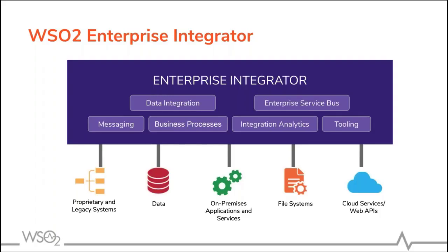Previously, the WSO2 integration platform consisted of a set of individual servers which fulfill different needs in enterprise integration: ESB as the central service bus which handles integration, and a data services server for exposing databases as services, a business process server to implement long-running workflows inside an enterprise, and the message broker as a messaging enterprise middleware layer. Most of the time, to build integration solutions we are using more than one product. In 2017, we decided to repackage all the enterprise integration products together and release a single product called WSO2 Enterprise Integrator, to make the user experience a better one.